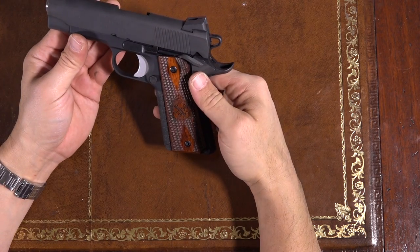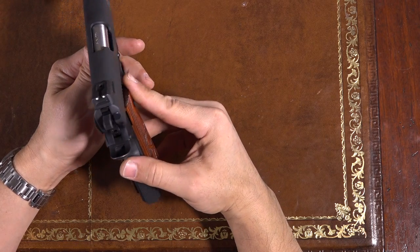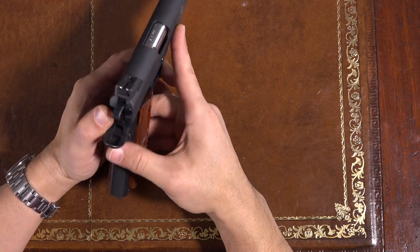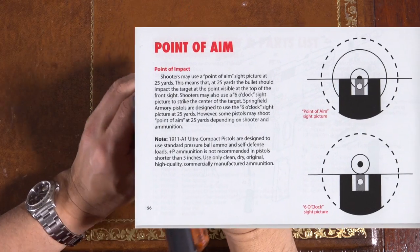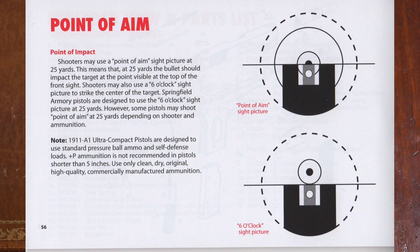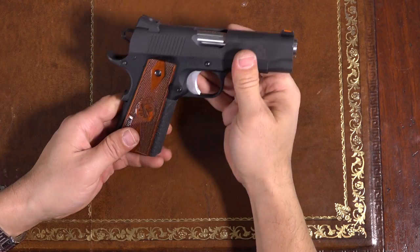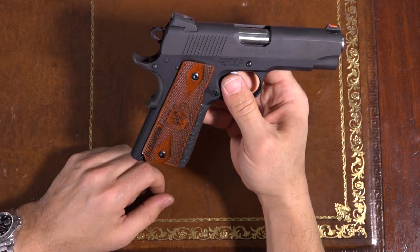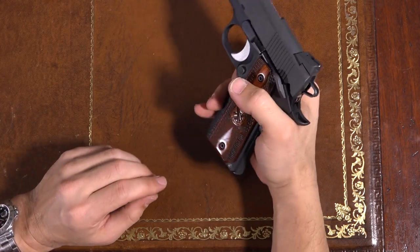But fantastic gun overall, very happy with the purchase. I think if you pick one up, you should be very happy as well. Just don't complain about the sights. It is a six o'clock hold. It's clearly stated in the manual. That's what it is. So I'll be changing that out to get the point of impact a little bit lower. But that's it. Springfield Armory, Range Officer Champion, commander size 1911 in nine millimeter. Thanks for watching.